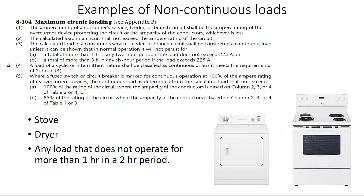Examples of non-continuous loads include your household dryer and your stove. Both operate with a timer and a thermostat that do not allow the equipment to constantly be heating the required area. Will a stove be operating for more than one hour in a two-hour period? No, it will not. Because we can prove that a stove meets the requirements of Subrule 3 — it will not operate for more than an hour in a two-hour period — it is considered to be a non-continuous load.